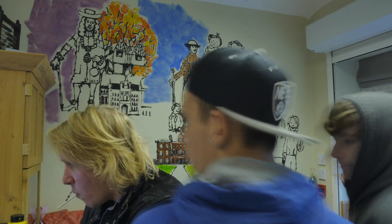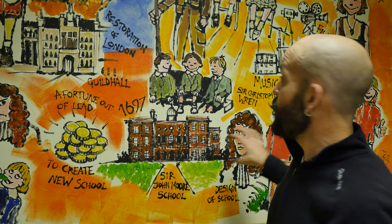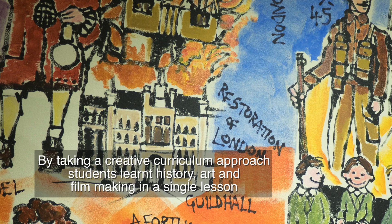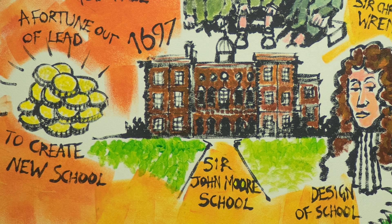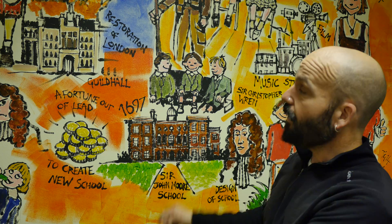To create this mural, the children that have come in today have asked questions — firstly, why is this picture here, why is that picture there. Because I'm learning as we go along, I'm able to explain to them why these pictures are here. For example, the Great Fire of London: St John Moore was the Lord Mayor of London, and the money he made from the selling of lead created this enormous beautiful building, which was designed by Sir Christopher Wren. I didn't know that myself until today.